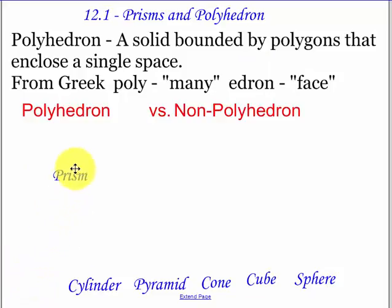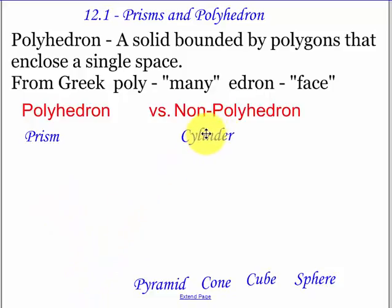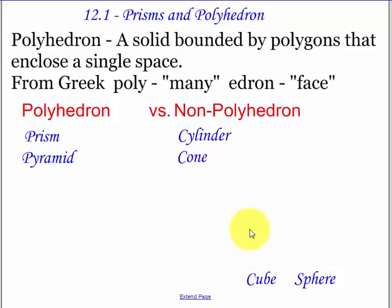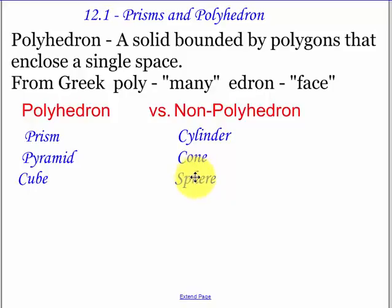A prism is considered a polyhedron because you're going to have polygons for the faces. A cylinder has circles, so that's going to be a non-polyhedron because you don't have polygons. A pyramid is technically considered a polyhedron because you have one base that's a polygon and your sides are triangles. A cone is not considered a polyhedron because you have a circle as your base and a sector as your lateral side. A cube is considered a polyhedron because each one of the sides is a square. A sphere doesn't technically have any faces, so that's a non-polyhedron.